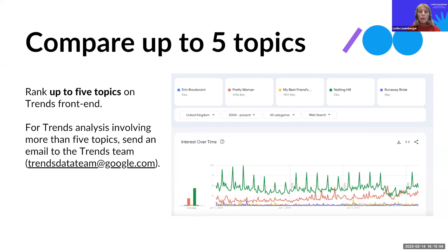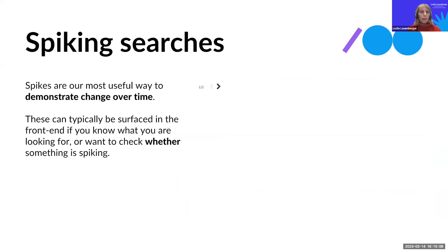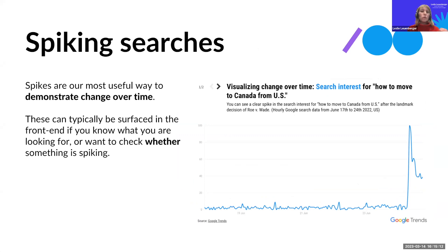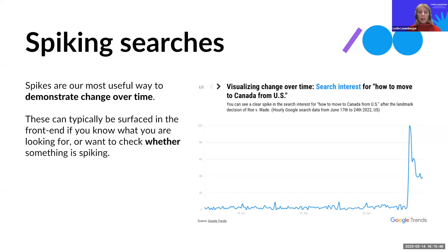With the Google Trends tool, you can compare up to five topics. In this example, I looked at different movies starring Julia Roberts, and we can see that Notting Hill has the highest search volume in the UK since 2004. Then there are spiking searches — we look for steady search interest and then a huge spike, which signals something must have happened. In this example, it's showing search interest for 'how to move to Canada from the US,' which spiked after Roe v. Wade was overturned last June. The same thing happened in 2016 — searches spiked like crazy and were never searched as much, related to a certain person being elected president.